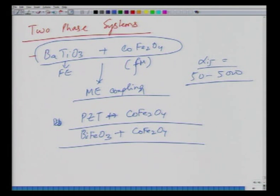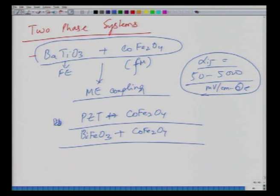In these two-phase systems, the magnetoelectric coupling constant αᵢⱼ can vary from 50 to 5000 mV/cm·Oe. Variety of these artificially structured composite systems can be made.